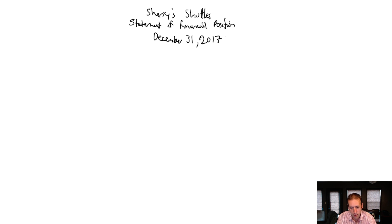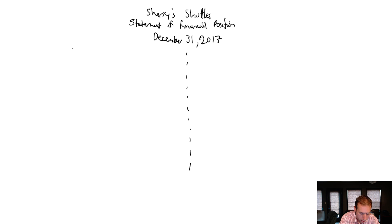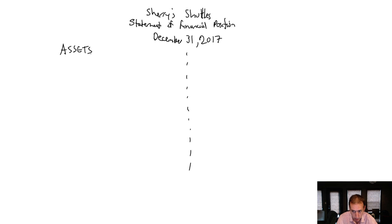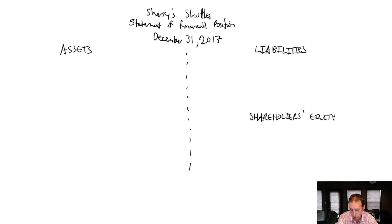When I wrap this up in my next video on ratios, I'll explain why we date balance sheets differently — why we don't say 'for the year ended' like we did for the other statements. Now, remember what a balance sheet is: assets equals liabilities plus shareholders' equity. On the left, I'll draw a dotted line down the middle — that's just for illustration. On the left, I write assets and list all my assets. On the right, I write liabilities and list all my liabilities. About halfway down the right side, I'll write shareholders' equity and list all of those accounts.